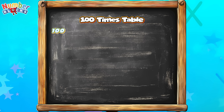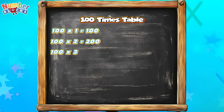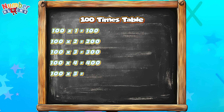One hundred times one is equal to one hundred. One hundred times two is equal to two hundred. One hundred times three is equal to three hundred. One hundred times four is equal to four hundred. One hundred times five is equal to five hundred.